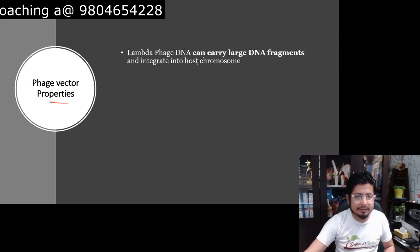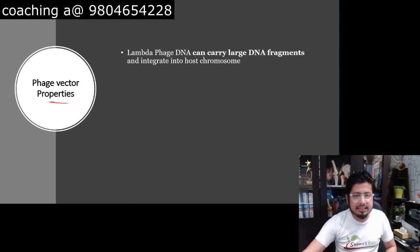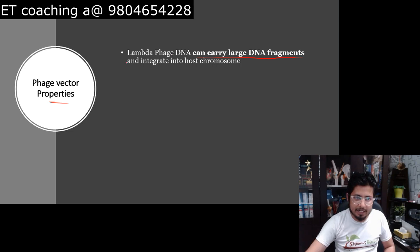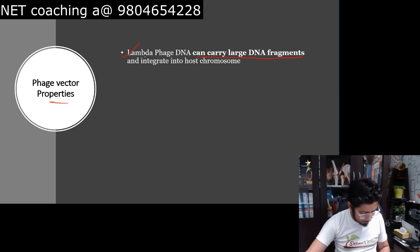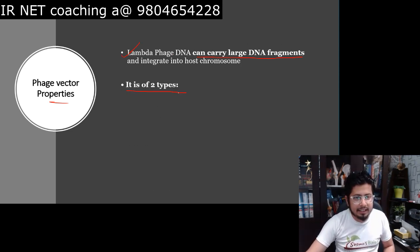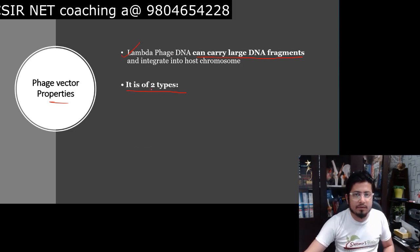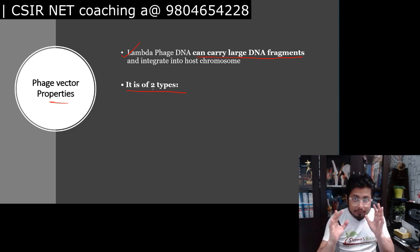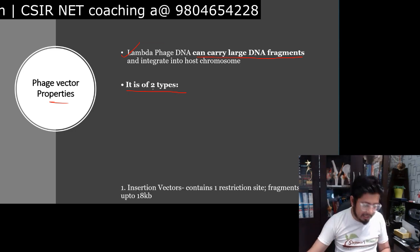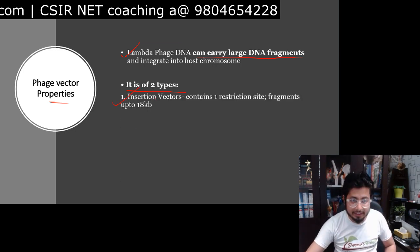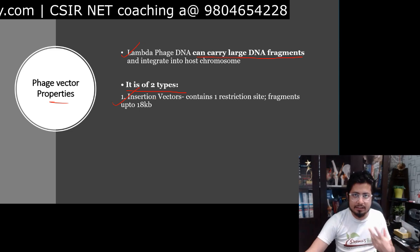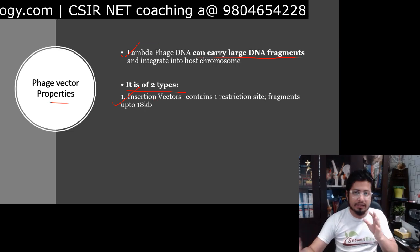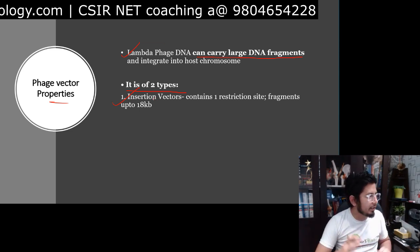Regarding phage vector properties: the DNA can carry large DNA fragments — that is one important and good property. There are two types of lambda phage vectors available: one is known as the insertional vector and another is known as the replacement vector.